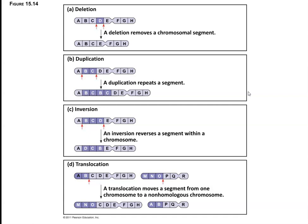You could have an inversion, which is where a section of the chromosome gets flipped around. For the most part, the entire chromosome would still be working, with the exception of any genes that span the break where the inversion happened. Any gene that spanned that region would be knocked out, and you would only have one copy on the chromosome that doesn't have the inversion.